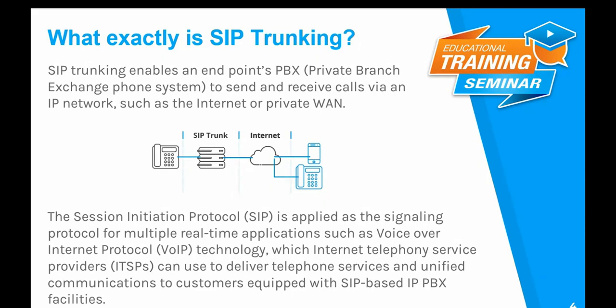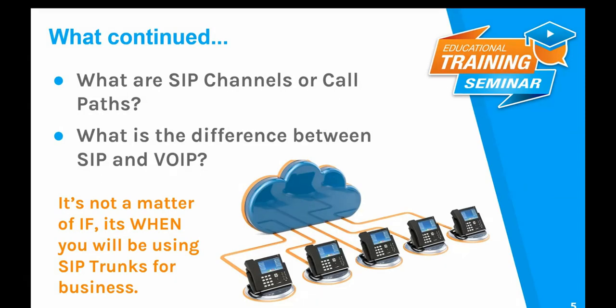The PSTN is the network of copper phone lines we traditionally associate with a telephone. It is a circuit switch network which requires a physical connection between two points to complete a call. Whereas SIP trunks are virtual phone lines that enable users to make and receive phone calls over the internet versus over copper lines — to anyone in the world with a phone number. SIP trunks utilize a packet switch network in which voice calls are broken down into digital packets and sent across the network to the final destination.